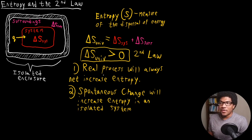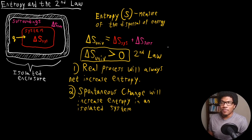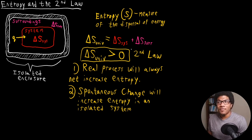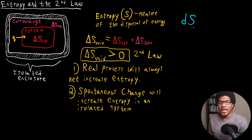Now the question remains: how do we thermodynamically define entropy? Think about it as trying to measure the dispersal of energy. We have a useful way of tracking how energy is dispersed or transferred by heat. So we're going to use heat as the way to define the total entropy. If we think about defining entropy, I'm going to write DS — this is just your differential for the entropy.